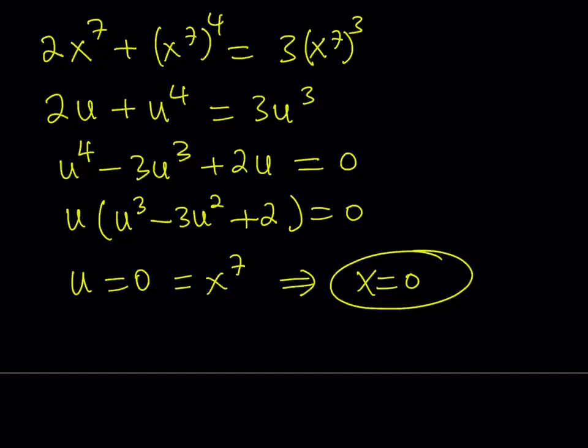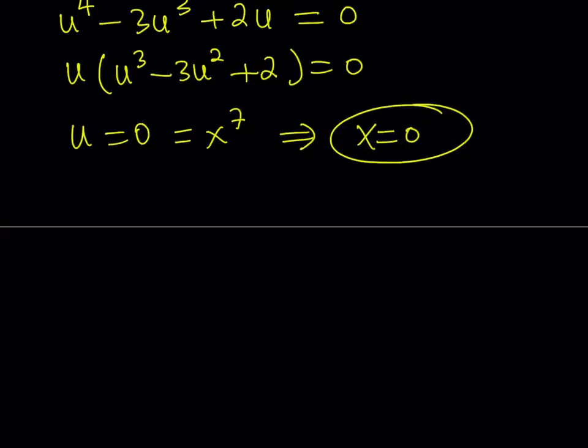We're going to write all the real solutions together at the end as a solution set. I'm also going to talk about complex solutions. So x equals 0 is kind of like a trivial solution to this equation. Now we have u cubed minus 3u squared plus 2 is equal to 0. Let's go ahead and write that down: u cubed minus 3u squared plus 2 equals 0.